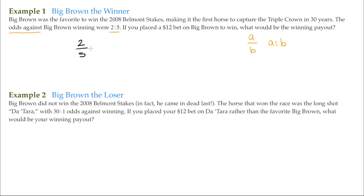We just simply multiply the odds fraction by the amount of the bet. 2/5 times 12 — that's 24 fifths, and 24 fifths translates to 4.8. Changing that to a dollar amount, that's $4.80. So if you make a $12 bet on Big Brown at 2 to 5, you're going to win $4.80. You'll also get your original $12 back, but you'll also get $4.80.